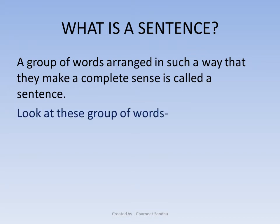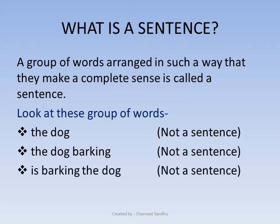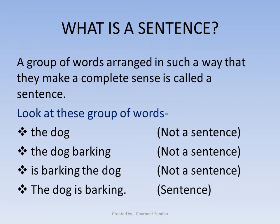Let us look at these group of words. 'The dog' — is this a sentence? No, it is not a sentence. 'The dog barking' — this again is not a sentence because it does not convey a complete meaning. 'The dog is barking' — here all the words are present but they are not arranged in a proper sequence, so this is also not a sentence. 'The dog is barking' — yes, this is a sentence because the words are arranged in a proper manner and they convey a complete meaning.